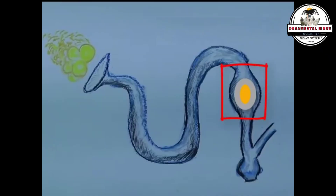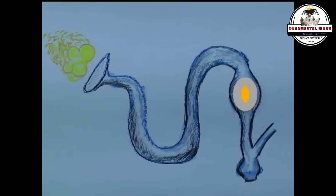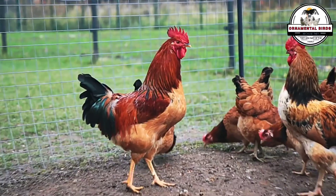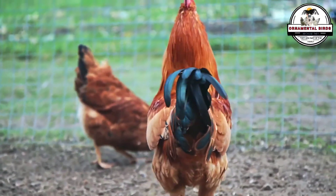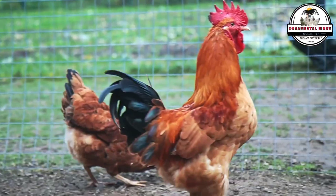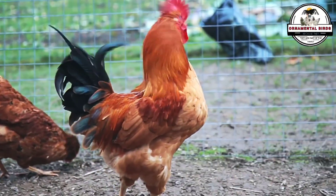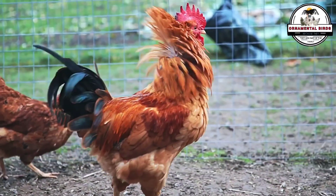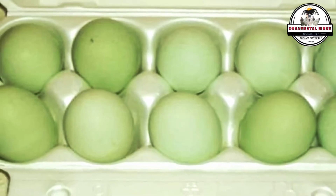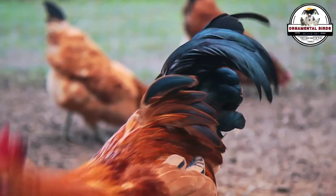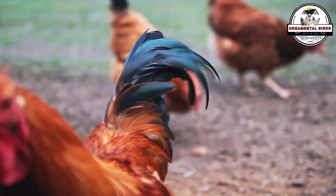The oviduct is a muscular tube about 24 to 28 inches long — approximately 60 to 70 centimeters — a true processing tunnel where the fertilized or unfertilized ovum is transformed into the egg we know. This tube is divided into five main sections, each with a specific function. The first is the infundibulum: the mouth of the oviduct, a kind of funnel that captures the ovum released by the ovary. It is here that, if sperm are present, fertilization occurs.